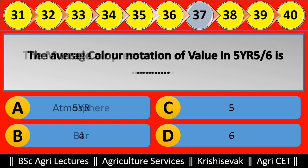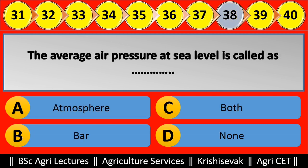Question 38: The average air pressure at sea level is called blank. Options are: (a) Atmosphere, (b) Bar, (c) Both, (d) None. Right answer is Both — the average air pressure at sea level is called both atmosphere and bar.